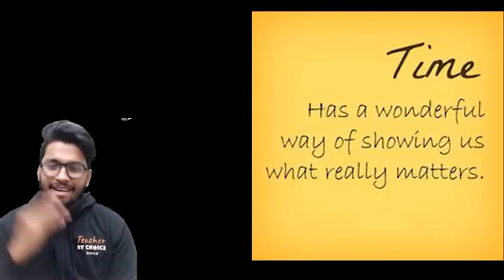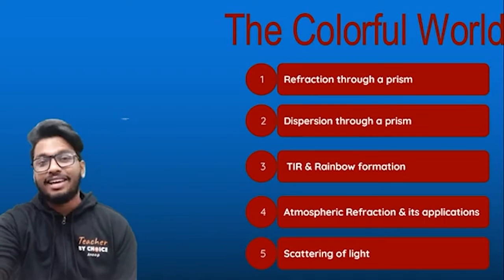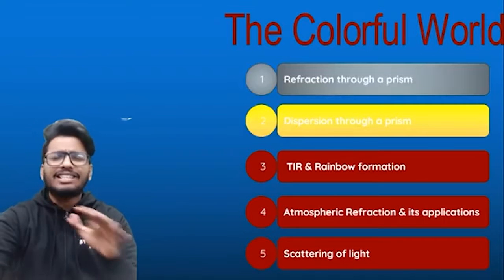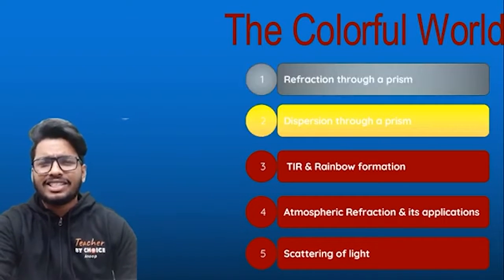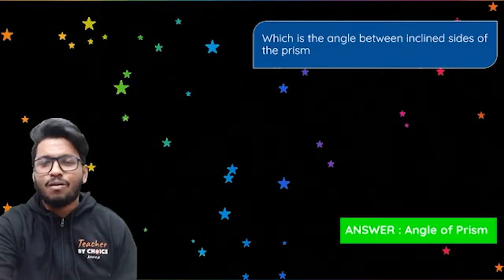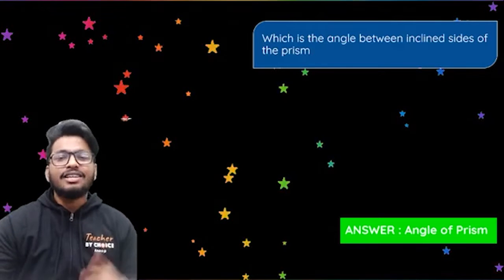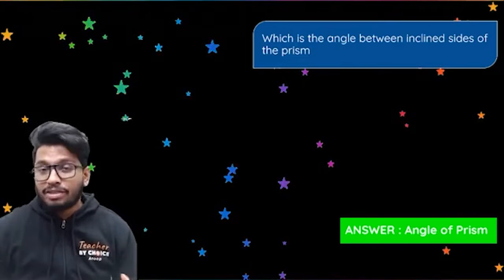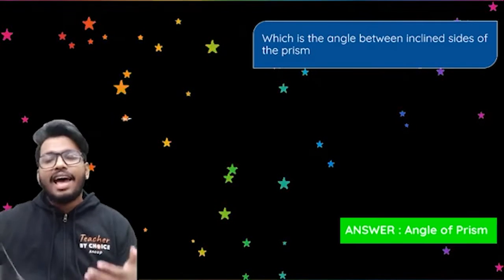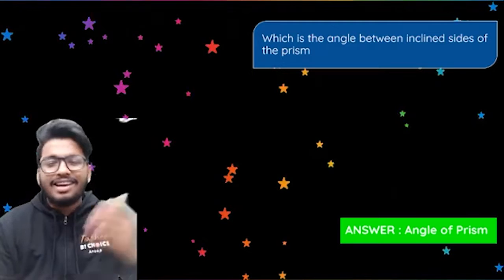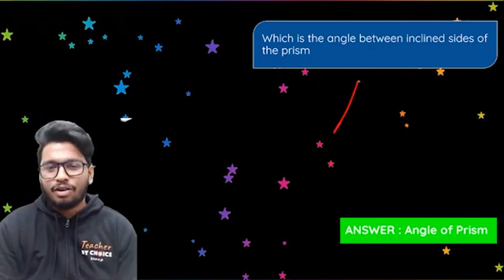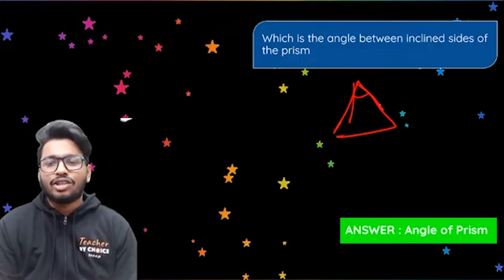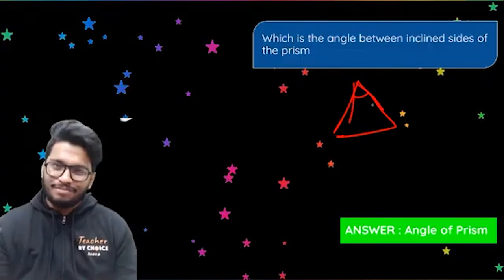Make smart choices and all the very best for your exams. Now let's get into the topic — dispersion through a prism. But before that, the homework from the last session: the angle between the inclined sides of the prism is called the angle of prism. So that's it — let's get into the topic now.